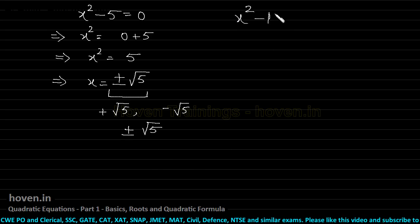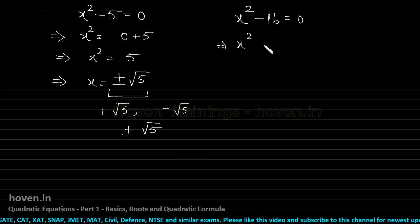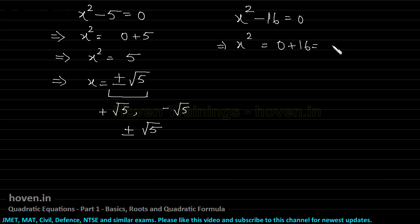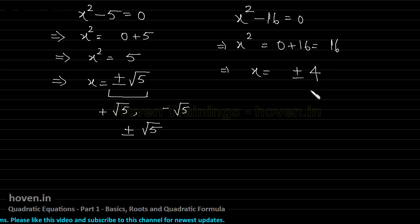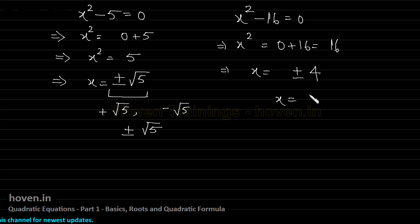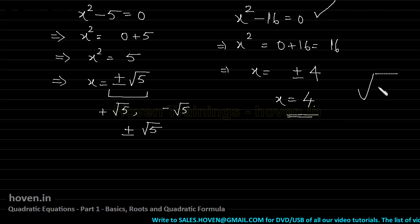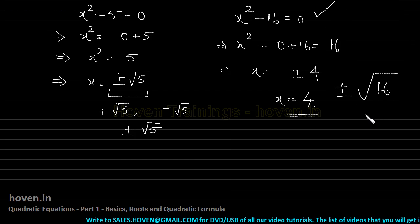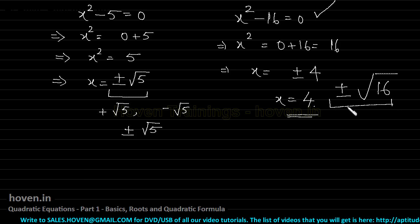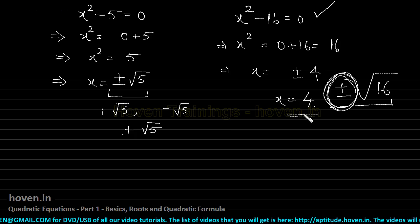Another example: x² − 16 = 0 implies x² = 16, which implies x = ±4. Many people ignore the minus sign and only write x = 4 — this is not wrong but only partially right. You must also write the minus value because for both +4 and −4 this equation is satisfied. Make it a permanent habit: whenever you take a square root, always write ±.